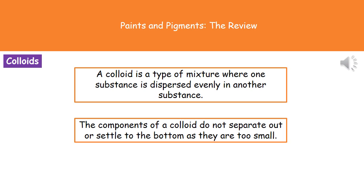The final term we need to know is the word colloid. When we're talking about a colloid, we're talking about a mixture where one substance is dispersed evenly in another substance. The key thing to remember is the word 'dispersed' — a colloid doesn't have anything that's dissolved; we must say it's dispersed. The particles being dispersed are tiny, so the colloid won't actually separate out into its individual components, because those particles are so small that they won't settle to the bottom.